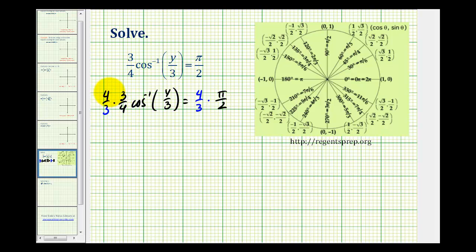So notice on the left side, this simplifies to one. So we have inverse cosine of y divided by three is equal to—here a factor of two simplifies out—so we have two pi over three.